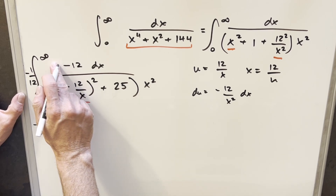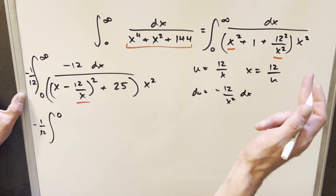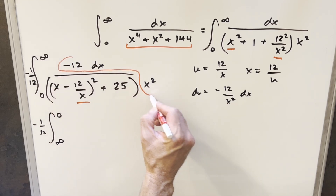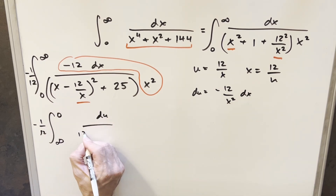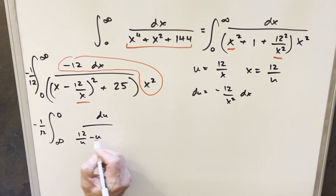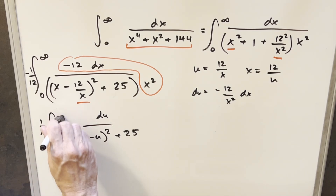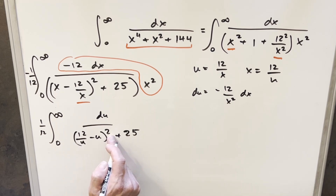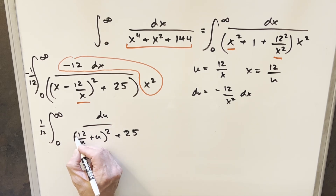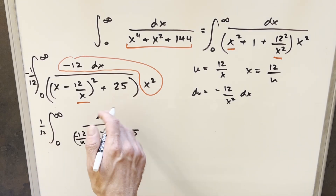For the bounds: when x goes to infinity, u goes to 0; when x goes to 0, u goes to infinity. Our du covers the whole numerator. Our x becomes 12 over u, and the term becomes minus u, with plus 25 over here. I'll take the minus sign and swap the bounds back to 0 to infinity, and multiply by minus 1 inside the square — since it's squared, that doesn't bother me. I'm doing that to get it to look like the original, because I want to use the common trick of adding this to the previous integral. I'll change everything back to x with the 1/12 out front.